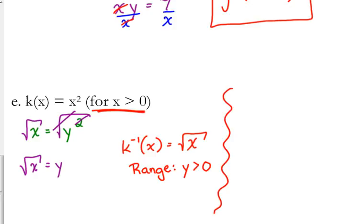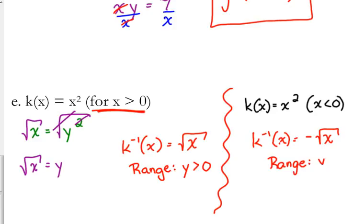Now just as a little side note, if the original problem had looked like this, if it had said k of x is equal to x squared, x is less than 0, then its inverse would be the negative square root of x because the range here would be y is less than 0. The negative is outside the square root. If it's inside, then that's where the imaginary thing comes from.